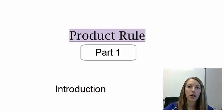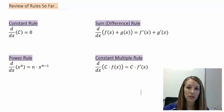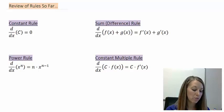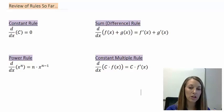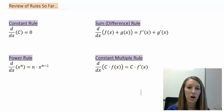In this section, we're going to be learning the product rule. But before we get into the product rule, let's review the four techniques we know so far: the constant rule, where the derivative of any constant is zero; the power rule, where you bring the power down and multiply by the base to one less than the original power; the sum rule, where we add the derivatives of the two pieces separately; and the constant multiple rule, where we pull the constant out and multiply it by the derivative of the function.